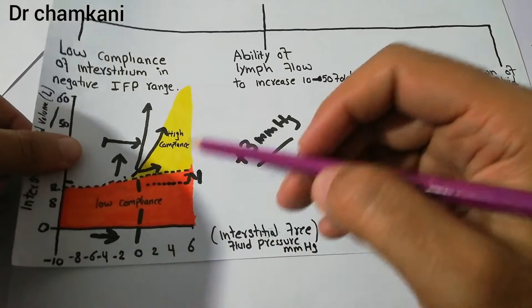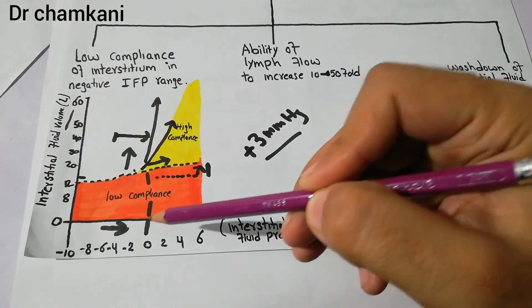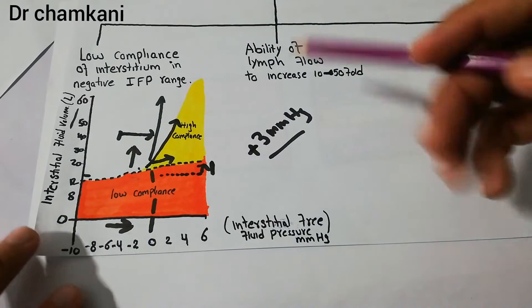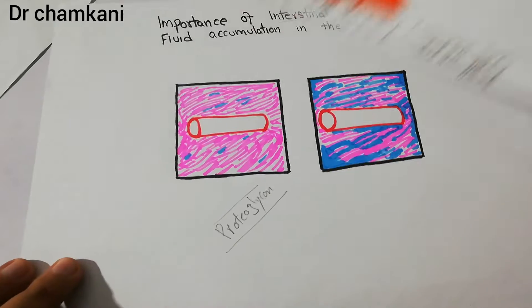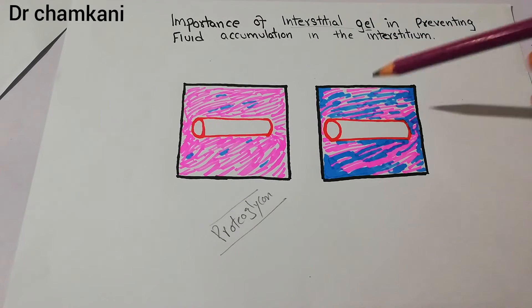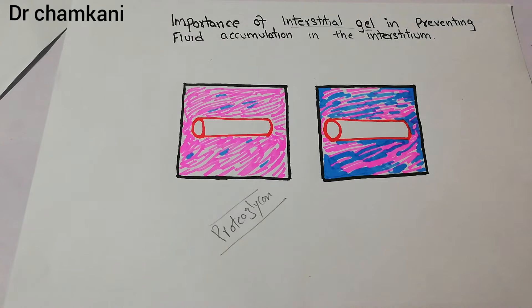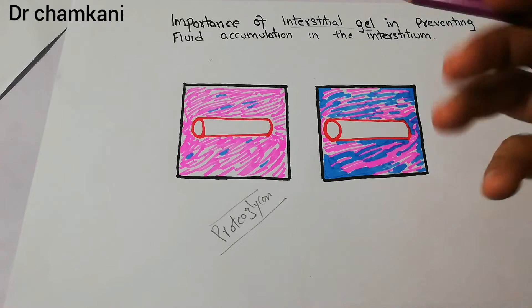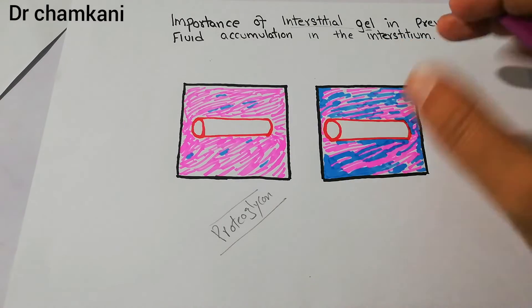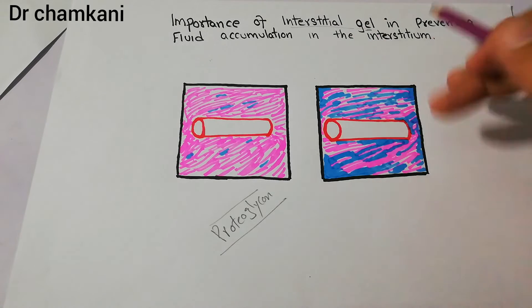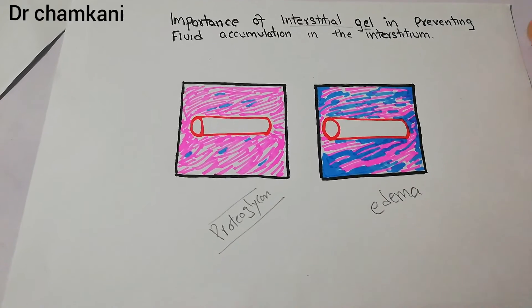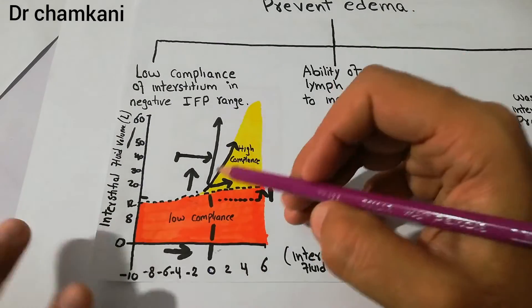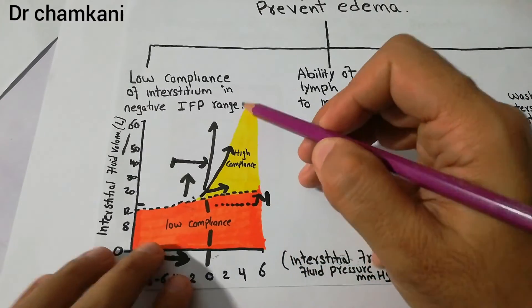Once the interstitial fluid pressure enters the positive range and crosses zero, there is a lot of fluid accumulation in the interstitium without much increase in interstitial fluid pressure. Free fluid starts to form in the interstitium, accumulating in the filaments of the proteoglycans and beginning to move around freely. Edema occurs only when the interstitial fluid pressure has entered the positive range, and only at that point does accumulation of extra fluid in the interstitium begin.